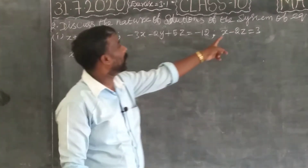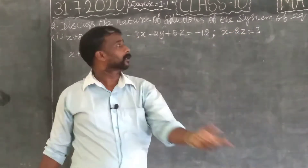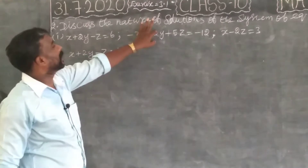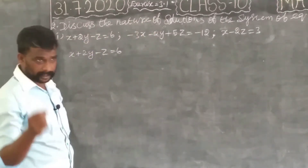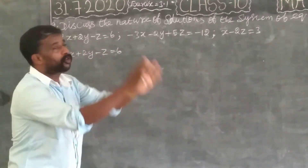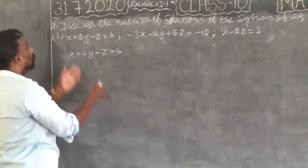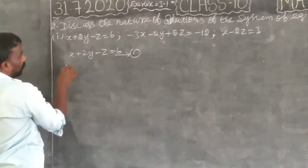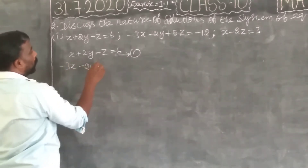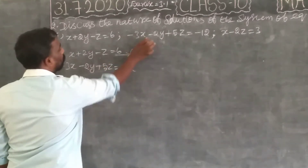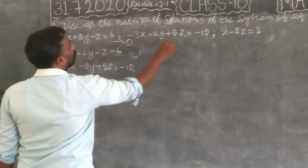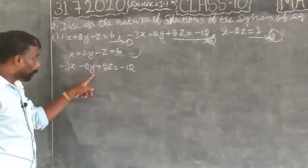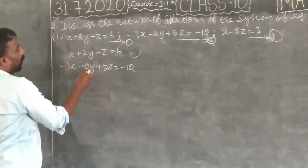Okay, now using the elimination method on the first and second equations — the y variable cancels. Yes, the y value cancels. Third equation: y variable cancels, leaving only x and z variables. Now apply elimination method to cancel x value and find y, x, and z values.